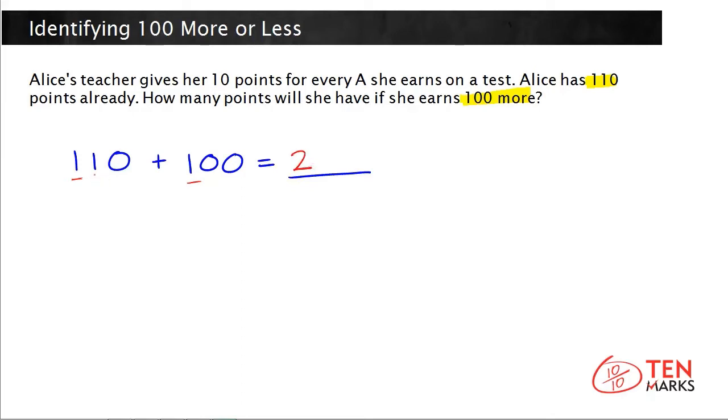And the original digits here, you have a 1 in the tens place and a 0 in the ones place. These remain unchanged. So there you go. That's how many points she will have if she earns 100 more.